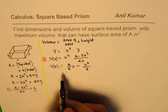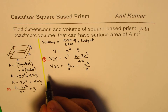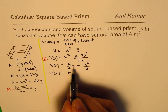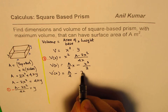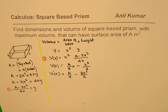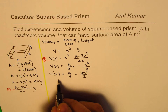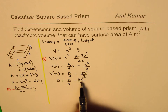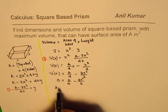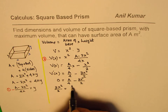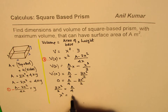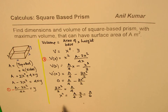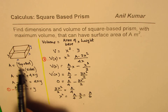To maximize volume, we find the derivative and equate it to zero. The derivative dV/dx = A/4 − 3x²/2. Setting this equal to zero for maximum: A/4 − 3x²/2 = 0, which gives 3x²/2 = A/4. Solving: x² = (A/4) · (2/3) = A/6. So the area of the base x² equals one sixth of the total surface area.